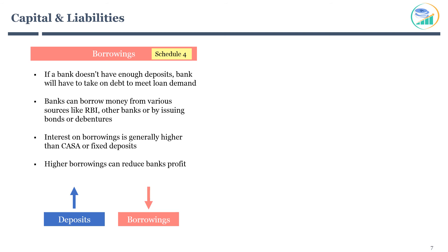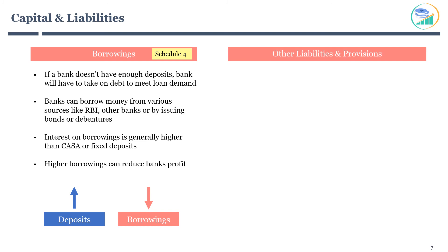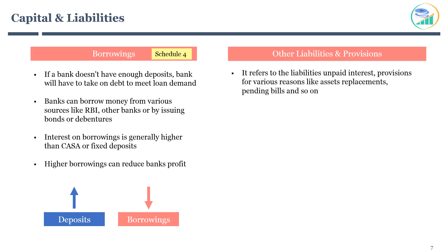The last line item on the liabilities side is other liabilities and provisions. Liabilities that do not get classified into previously discussed categories fall here. This includes liabilities related to unpaid interest, provisions for replacing assets, pending bills, and so on. You can review Schedule 5 for the details.